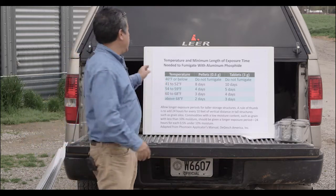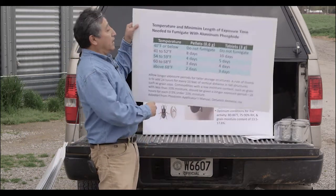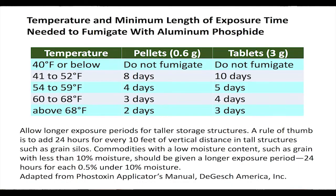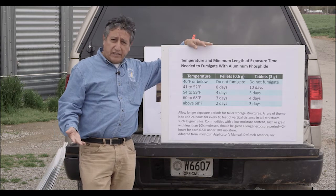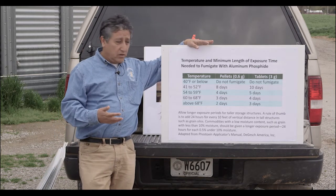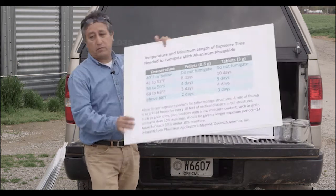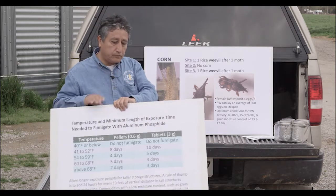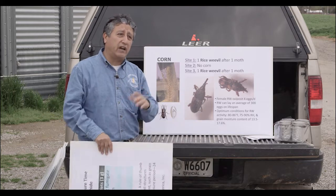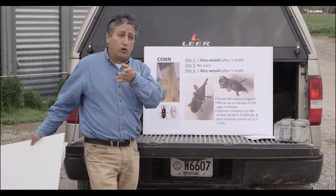Sam also talked about temperatures and insect development. Temperature is important not only for insects but also for how well the products work. For example, for aluminum phosphide, if the temperature is below 40 degrees Fahrenheit, it is not going to work. At other temperatures you have periods where it can be successfully effective. The same situation happens with some insecticides when you try to use them for insect control on growing plants.